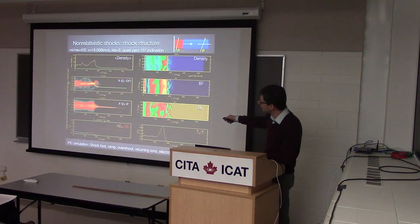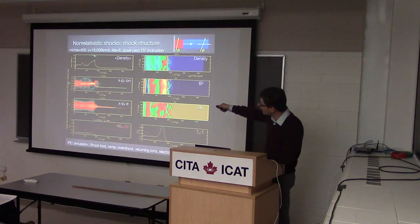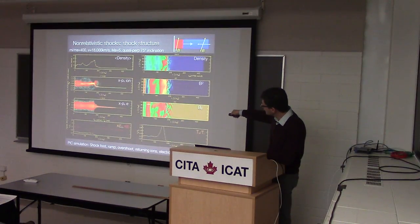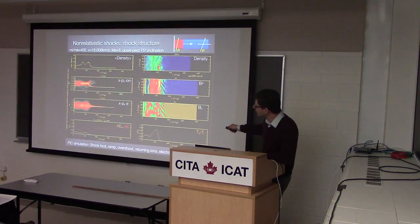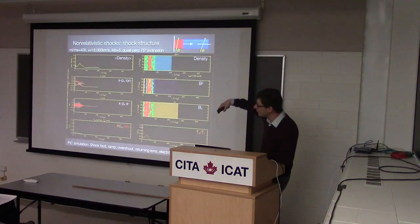Looking at what these shocks look like in PIC simulations: here is a density profile and momentum space. You can see an incoming flow that sees a shock jump, and the ions start to gyrate. Density kind of follows the ions — whenever you have a turning point in the ions, you see a spike in density. Magnetic field follows density, roughly.